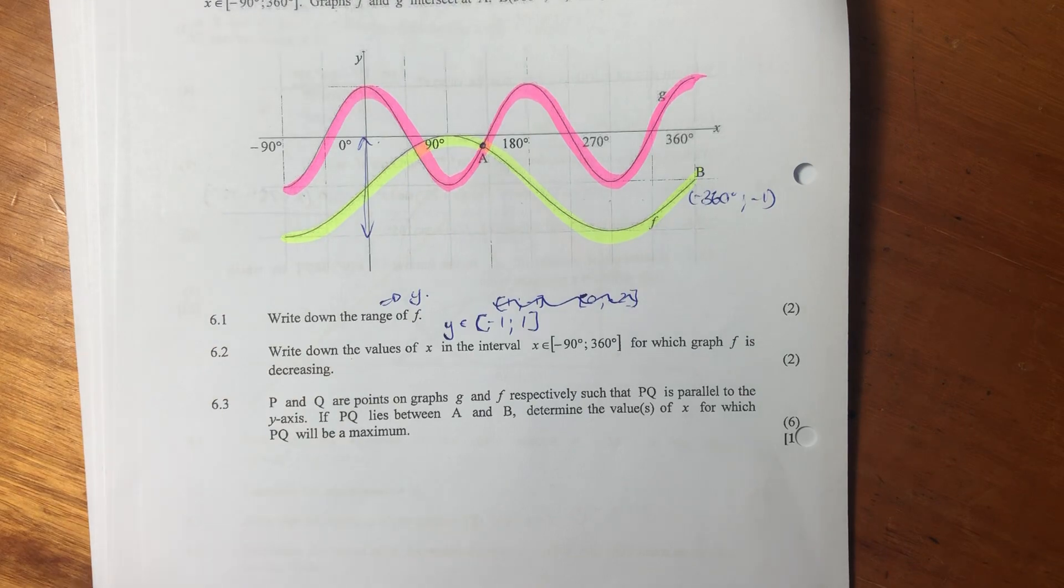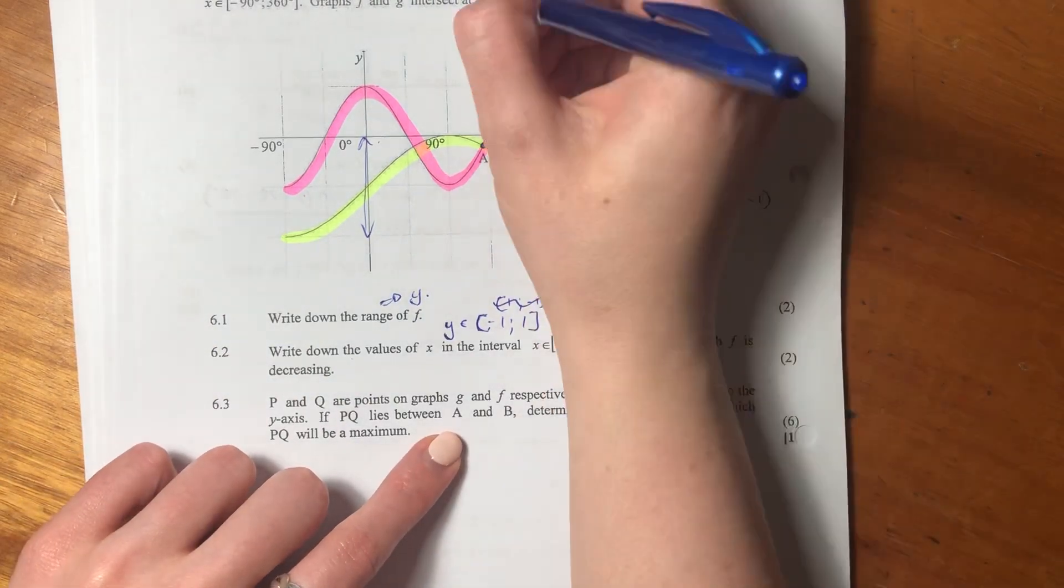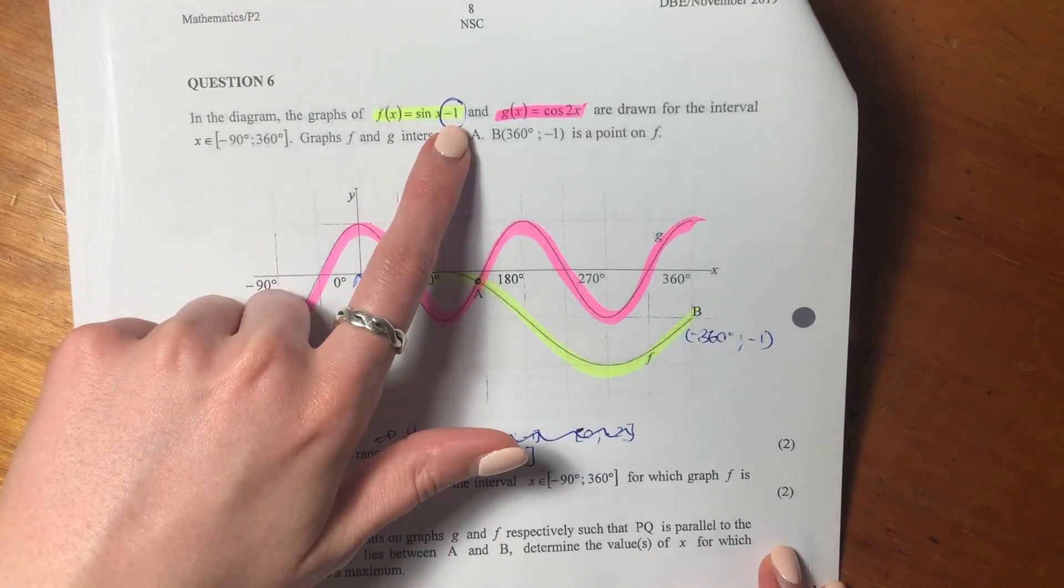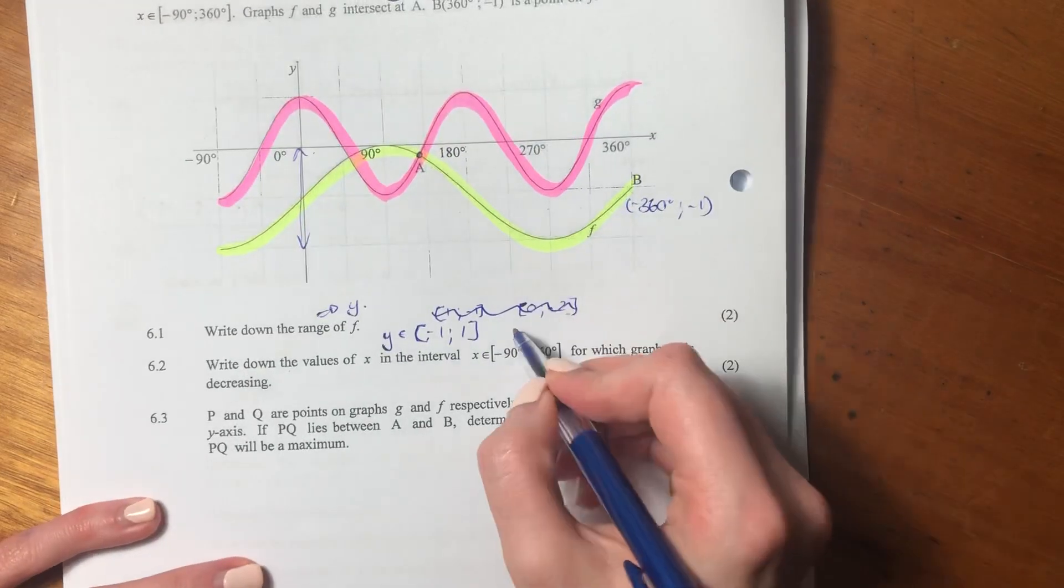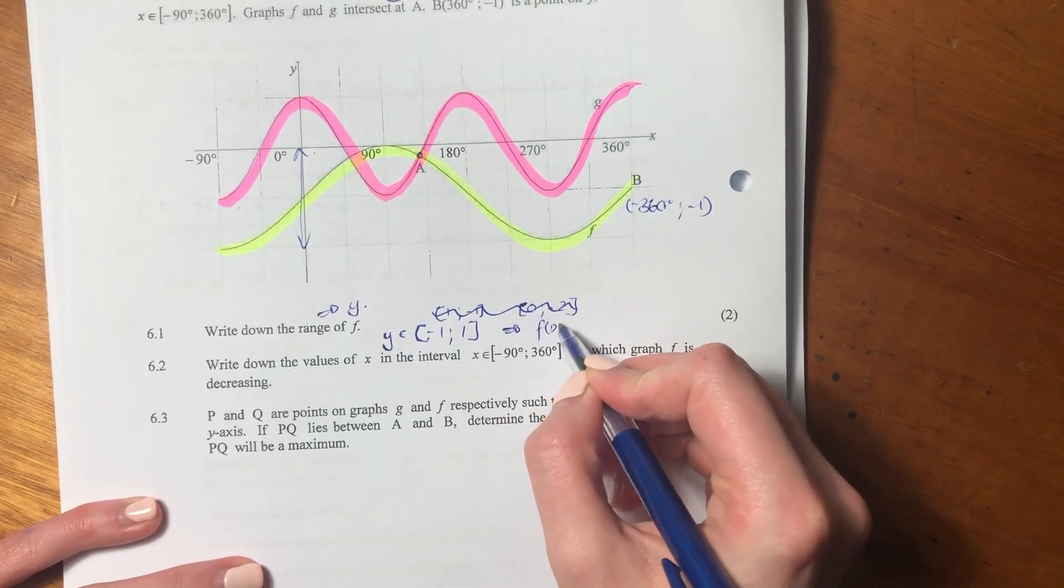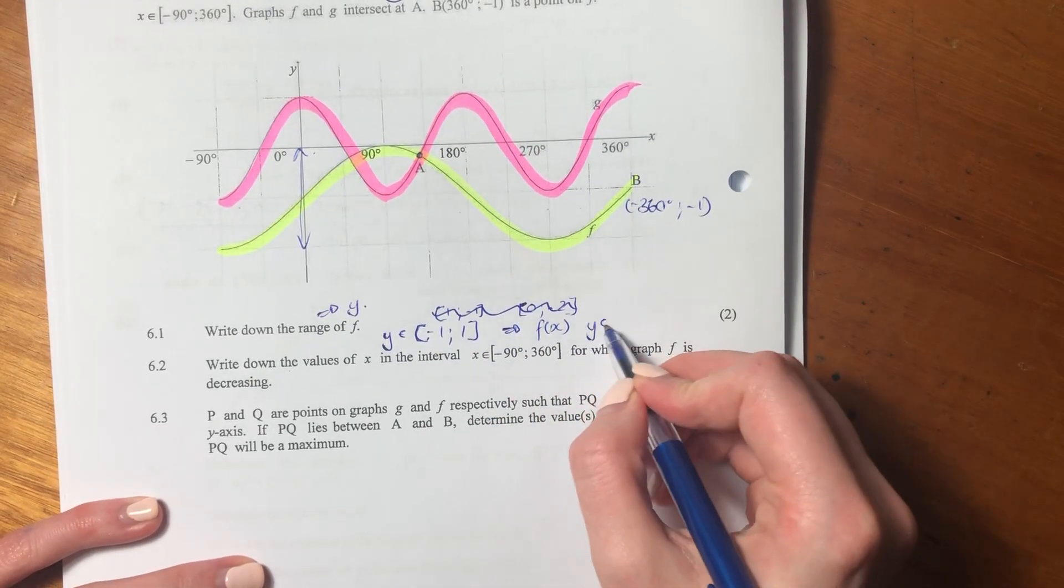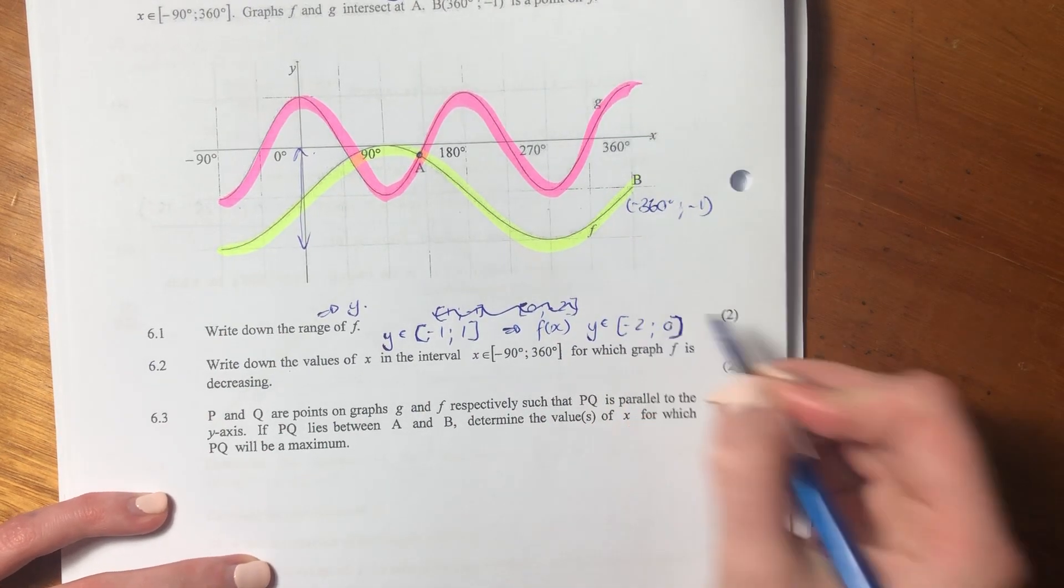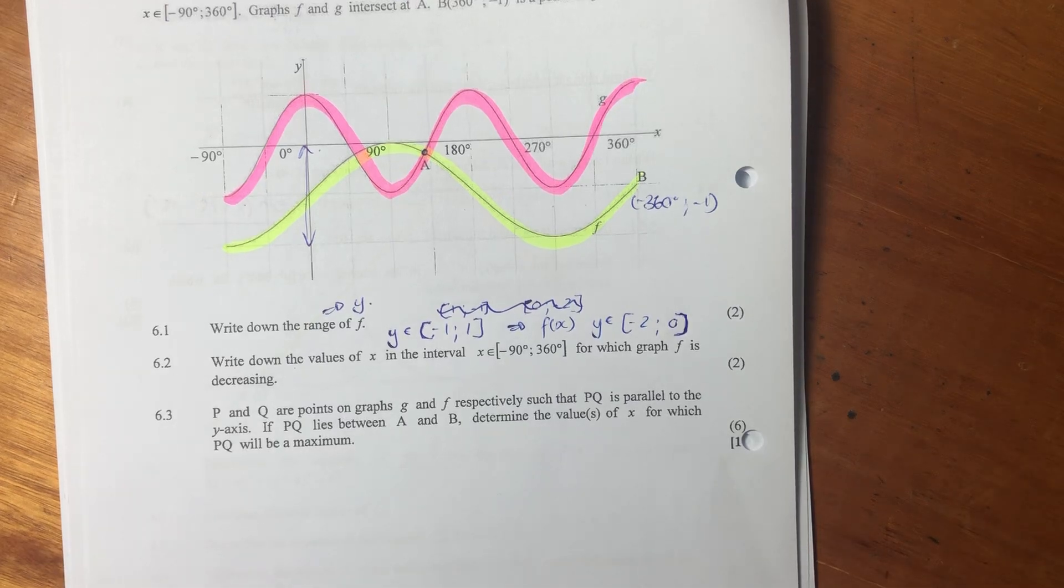But this is a shifted graph. We see that the shift is negative 1, and we know that the shift is in the y. So for this f(x) graph, y is going to be an element of negative 2 and 0. Both of those are hard brackets because it's included.